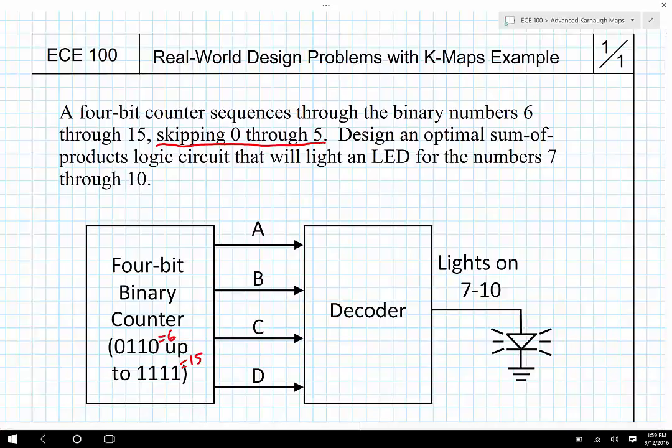Design an optimal sum of products logic circuit to light an LED for the numbers 7 through 10. So 7 through 10, that's going to be the places where there are 1s in the K-map. And then 11, 12, 13, 14, and 15, those will be 0s in the K-map, because those are valid inputs for which we do not want to light the LED.